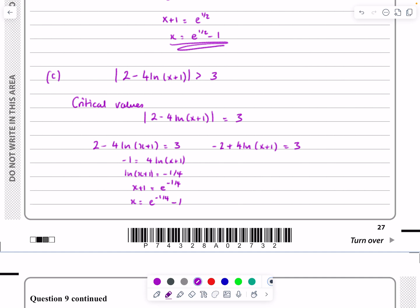And on the other side, I would get 5 is equal to 4 ln(x+1). I'm just running through that then. So 5 over 4 is ln(x+1). x plus 1 equals e to the 5 over 4. So x is going to be e to the 5 over 4 minus 1.